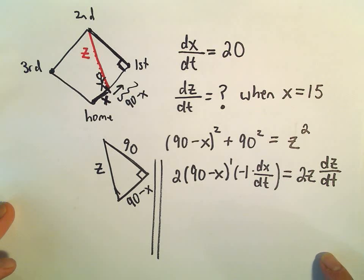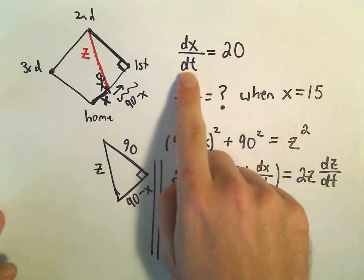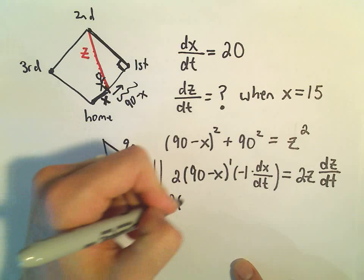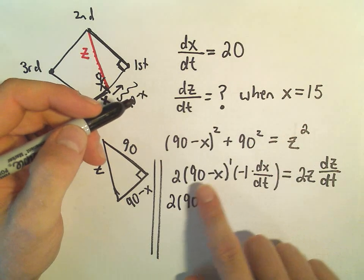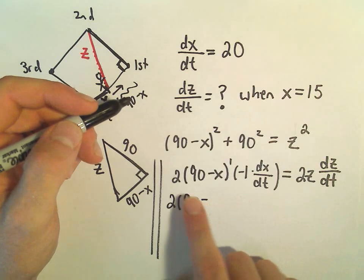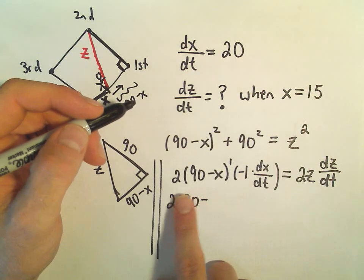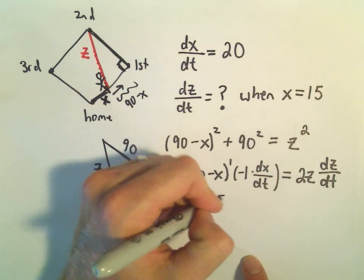Alright, so I think we can plug in a lot of stuff here. We know that dx/dt at that instant is going to equal, so we know that x is going to equal 15. So we can say 90 minus 15, and then we would have negative 1 times dx/dt, which is going to be 20.